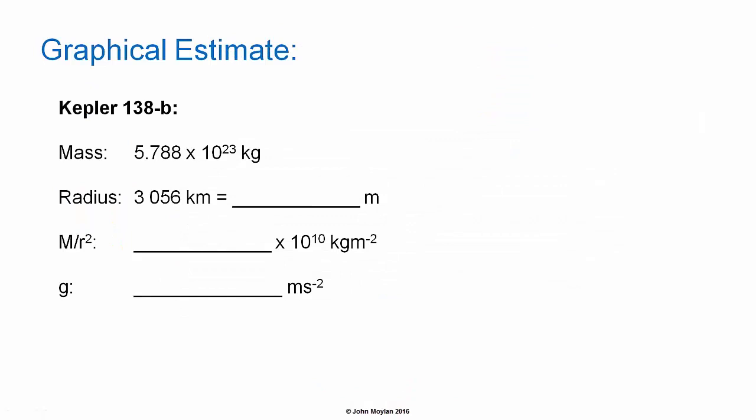For Kepler 138 b, mass is 5.788 × 10²³ kilograms and radius is 3056 kilometers. The first thing you'll have to do is convert the radius from kilometers into units of meters. Then divide the mass 5.788 × 10²³ kilograms by the radius squared in meters, which gives you a value for M/r². Use that value to get the acceleration due to gravity from the graph. There is a full worked example of how to do this in the next lecture.